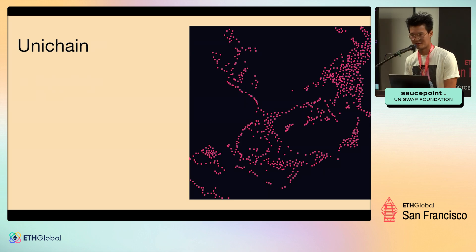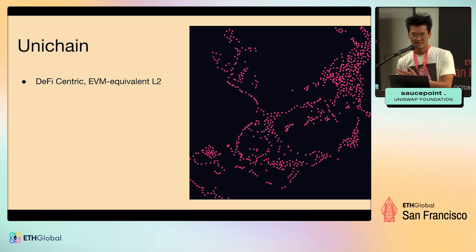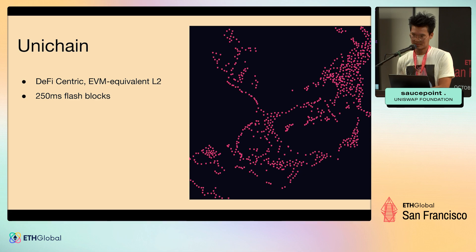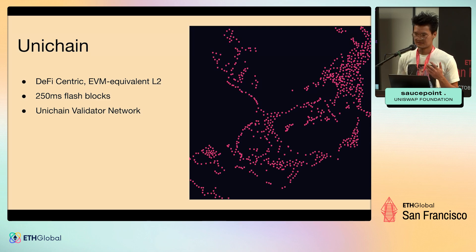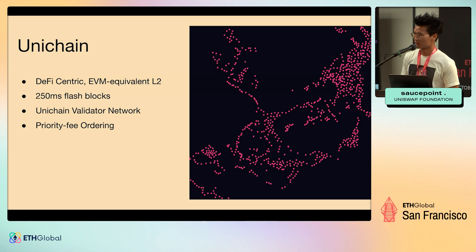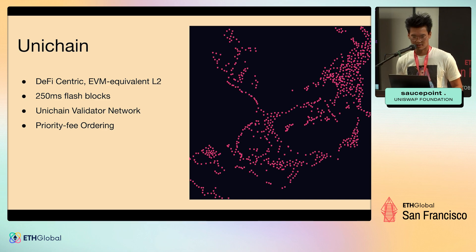Unichain — as you guys saw last week, we announced a DeFi-centric EVM-equivalent L2 built on the superchain. It has 250 millisecond flash blocks, so transactions confirmed super quickly. We have a validator network associated with it, and also priority fee ordering with less sandwich attacks happening on Unichain.